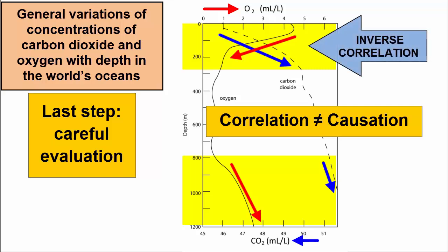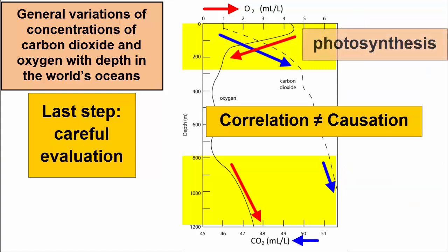For example, in the graph, we see inverse correlation at the surface. Below 800 meters, there is a correlation for the same parameters, so we can't apply a simple causation model because the data contradict that. However, there are processes at work at the surface of the ocean where sunlight is abundant that aren't at work at depth where it's dark. Photosynthesis exists at the surface, and this process uses up carbon dioxide and produces oxygen. So that's a good hypothesis for explaining the surface variations.